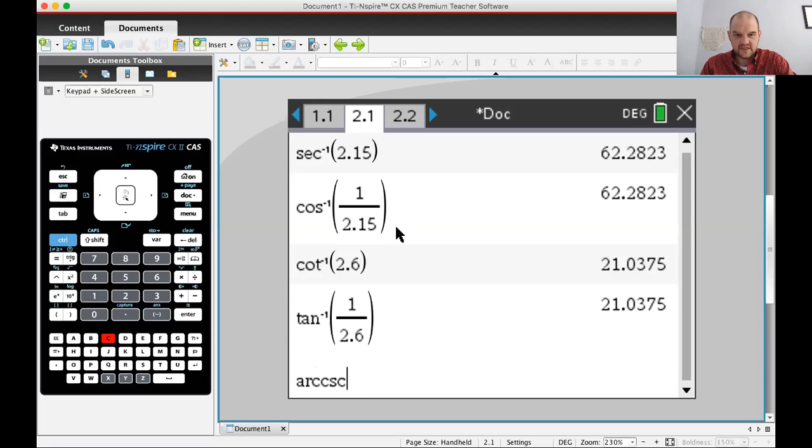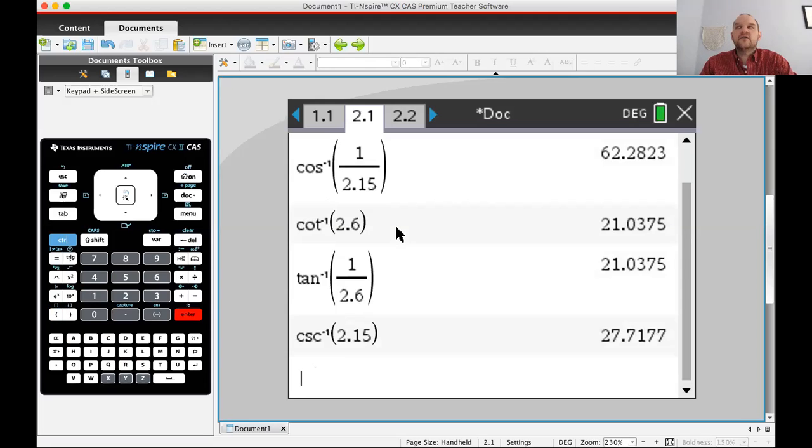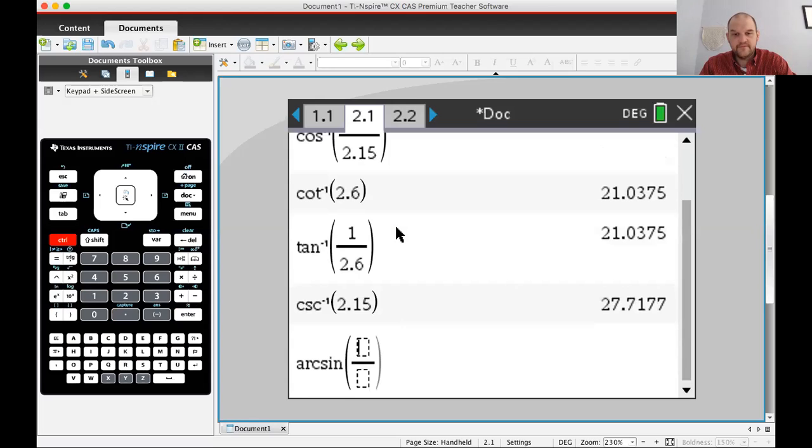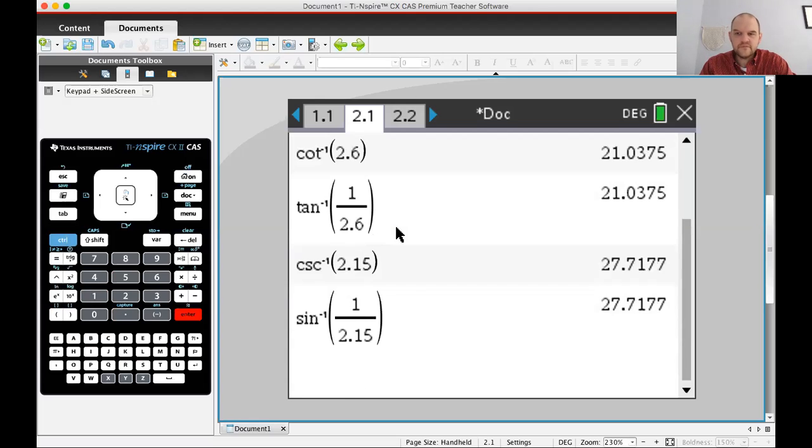So I want to do the inverse cosecant or the arc cosecant of 2.15. Okay, so cosecant is 1 over sine. So that means sine of alpha would be 1 over 2.15. So if I did the arc sine or the inverse sine of 1 over 2.15, same result. 27.718. 27.718. Okay. Degrees. All right, let's go back and take a look at what the next problem says.